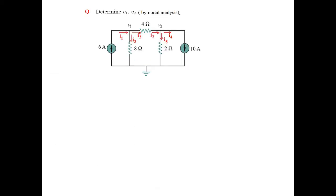Let's solve another example. There are two current sources: 6 ampere current entering and 10 ampere current leaving. We have to find the V1 and V2 voltages by nodal analysis.